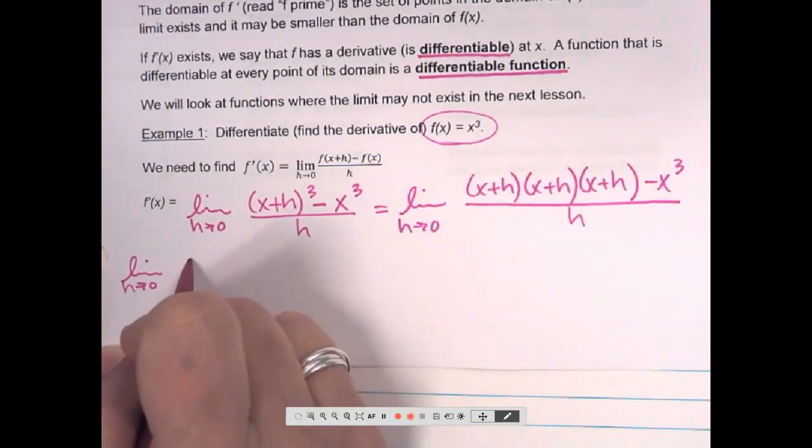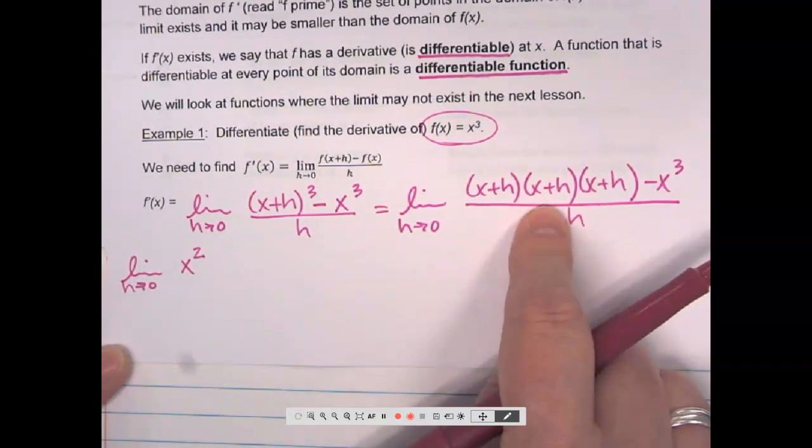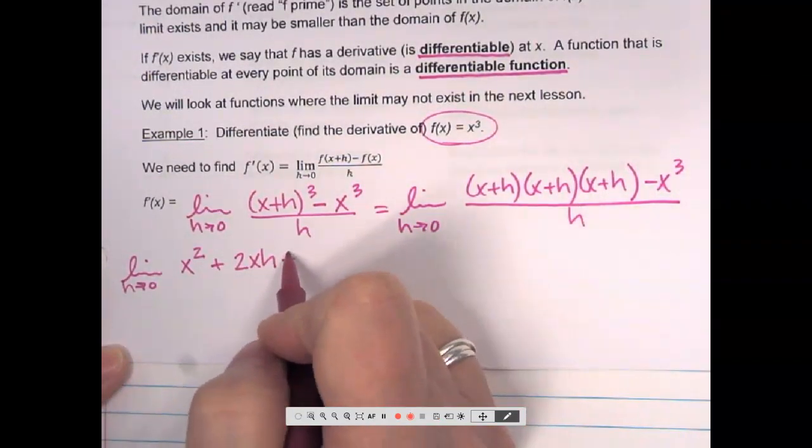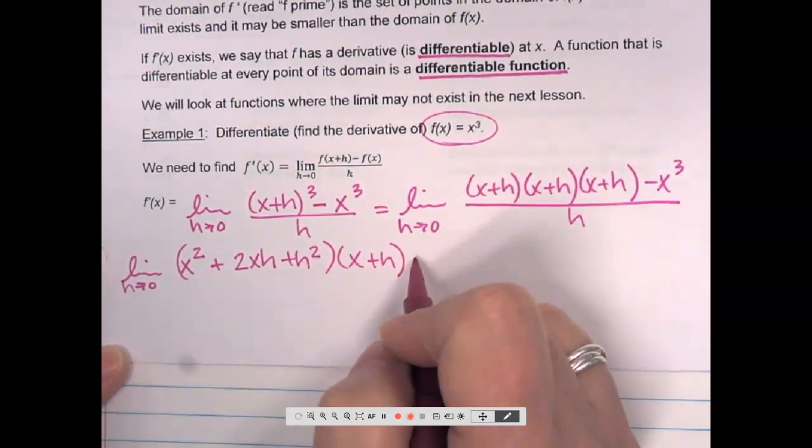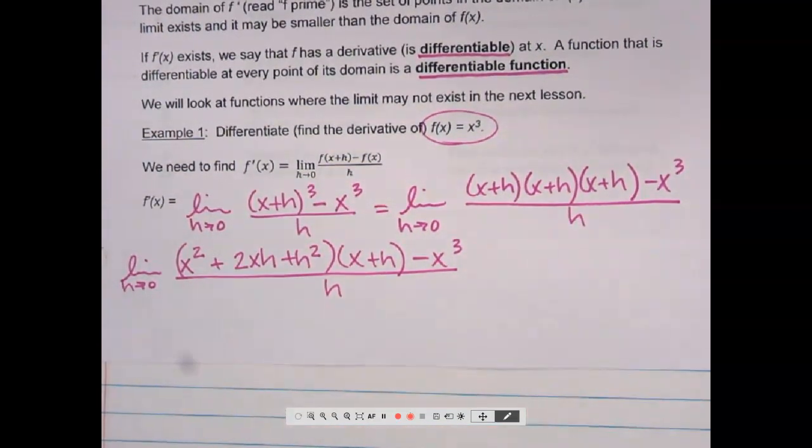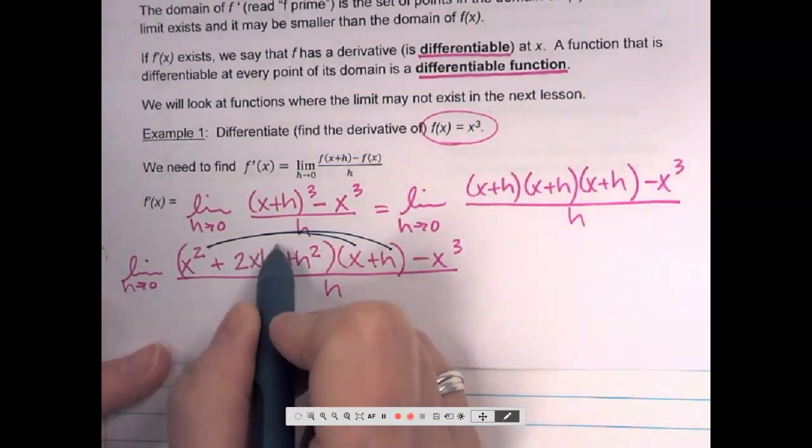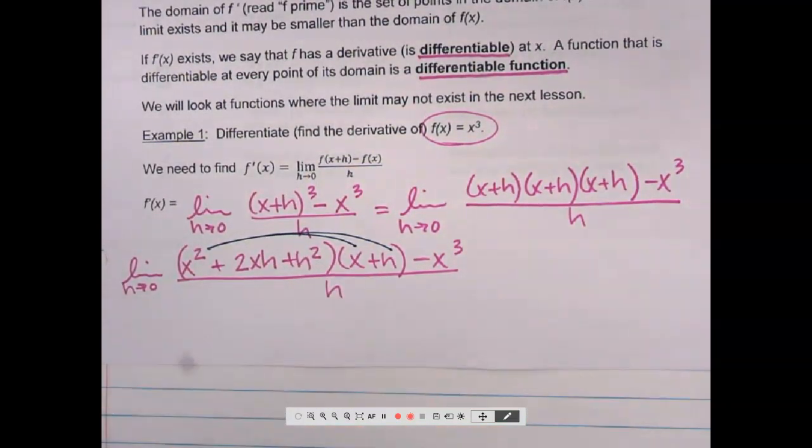So, I have the limit as h approaches zero. Just doing those two that come first. x squared. What's xh plus hx? 2xh. Can I say 2hx? Yep. It doesn't matter. Plus h squared. And then, all of that will have to be distributed with one more x plus h. Is everybody okay with that? So, I'm going to take the x squared. Distribute to both. Then, the 2xh. Distribute to both. Then, the h squared. Distribute to both. So, I'll have six things to multiply here.